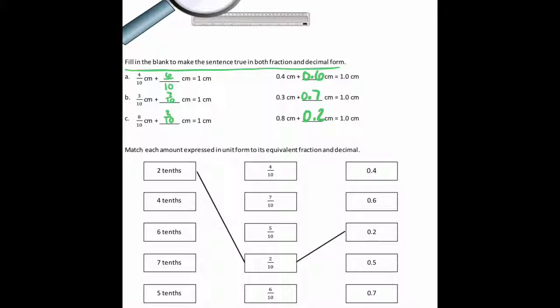Okay, on this next section, we're just matching. So we're matching the written form to the fraction form to the decimal form. So I'm going to say 4 tenths goes here. So I'm going to draw the line to 4 tenths to 4 tenths. 6 tenths matches with 6 over 10. 7 tenths matches with 7 over 10. And 5 tenths matches with 5 over 10.